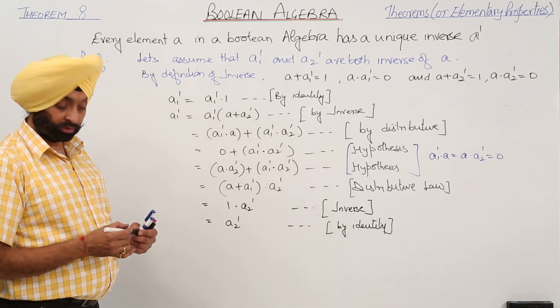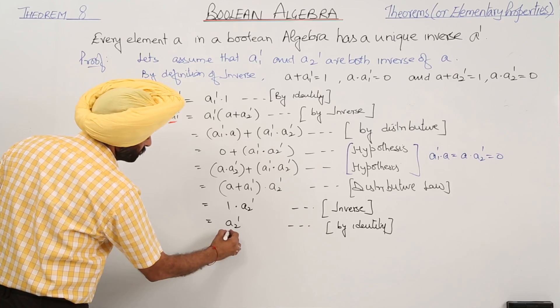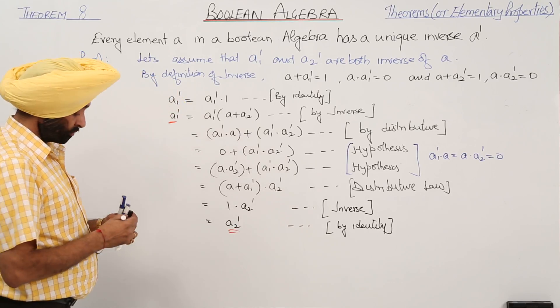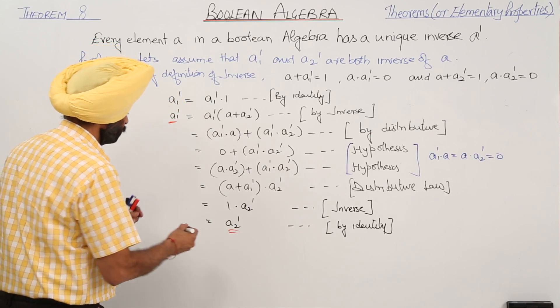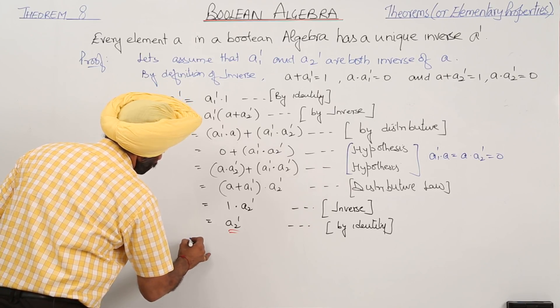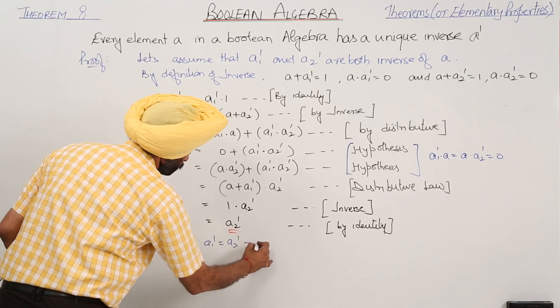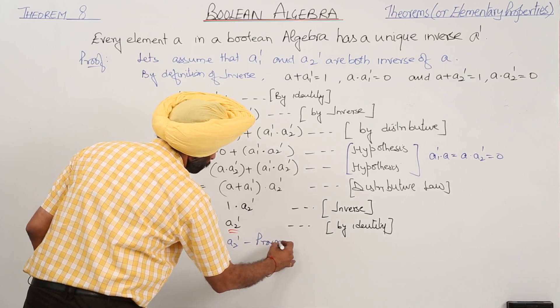Now what have we proved? Just check it. What we have done: we have shown that A1 inverse equals A2 inverse. So therefore, A1 inverse equals A2 inverse. We have proved this thing.